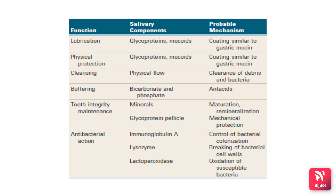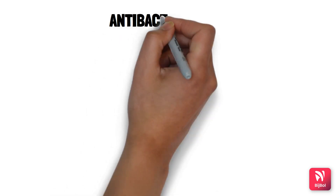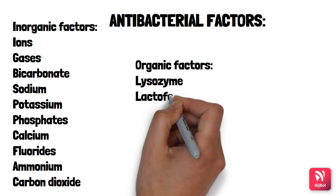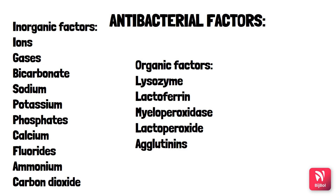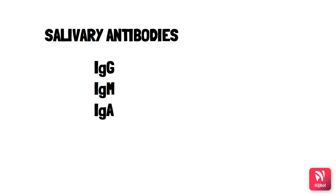Saliva contains immunoglobulin A, lysozyme, and lactoperoxidase for antibacterial action. IgA controls bacterial colonization; lysozyme breaks bacterial cell walls; lactoperoxidase aids oxidation of susceptible bacteria. An important MCQ: saliva has a greater amount of IgA, whereas GCF has a greater amount of IgG. Antibacterial factors in saliva include organic factors (lysozyme, lactoperoxidase, agglutinins) and inorganic factors (ions, sodium, potassium, calcium). The predominant immunoglobulin in saliva is IgA; in GCF it is IgG.